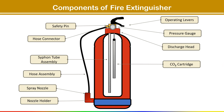Next is the CO2 cartridge. CO2 cartridges are commonly used in portable fire extinguishers designed for Class B and Class C fires. This cartridge stores the CO2 gas under pressure and acts as the propellant or expellant in the extinguisher.